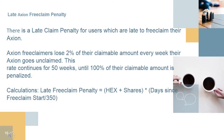Late Axion free claim penalty: there is a late claim penalty for users who are late to free claim their Axion. Axion free claimers lose 2% of their claimable amount every week their Axion goes unclaimed. This rate continues for 50 weeks, until 100% of their claimable amount is penalized. The formula: late free claim penalty = HEX shares × (days since free claim start / 350).